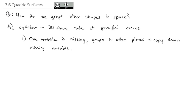In other words, if x is missing, we'll graph it in two dimensions on the y-z plane, and then we'll copy that y-z graph all the way up and down the x-axis. Let's take a look at some examples so we can see that happen.